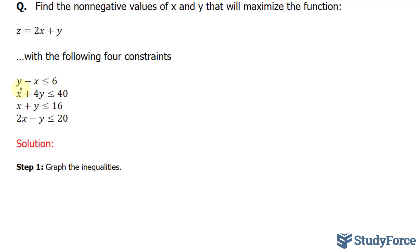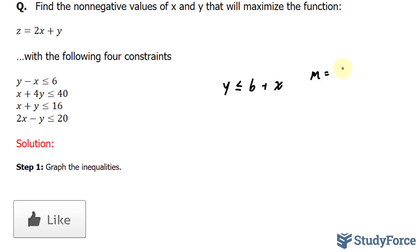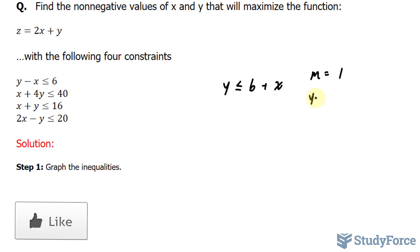Notice that they are all linear equations, except we need to isolate for y in order to graph them quickly. So I'll do that first. y - x ≤ 6 is the same thing as saying y ≤ 6 + x. Notice that I've moved the x over to the right side and it became positive. Therefore, my slope here is represented by the coefficient of x, which is 1. My y-intercept is (0, 6).